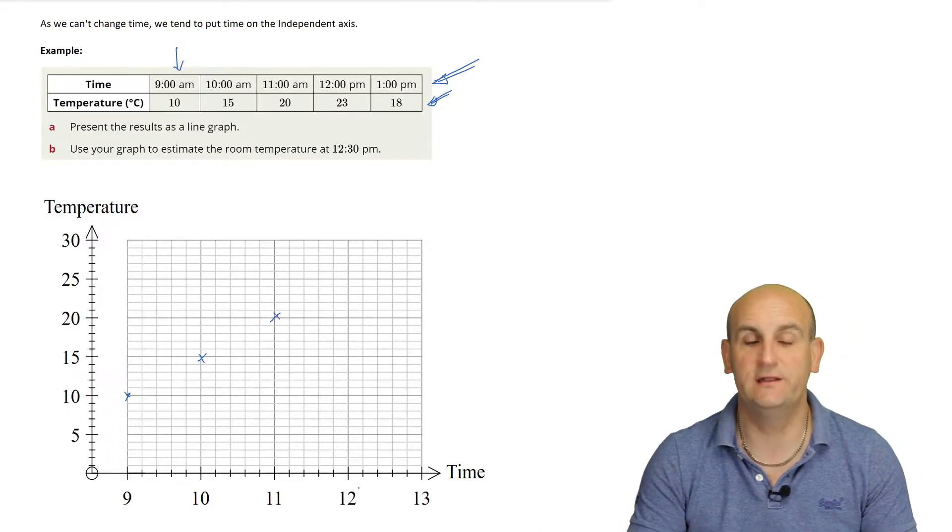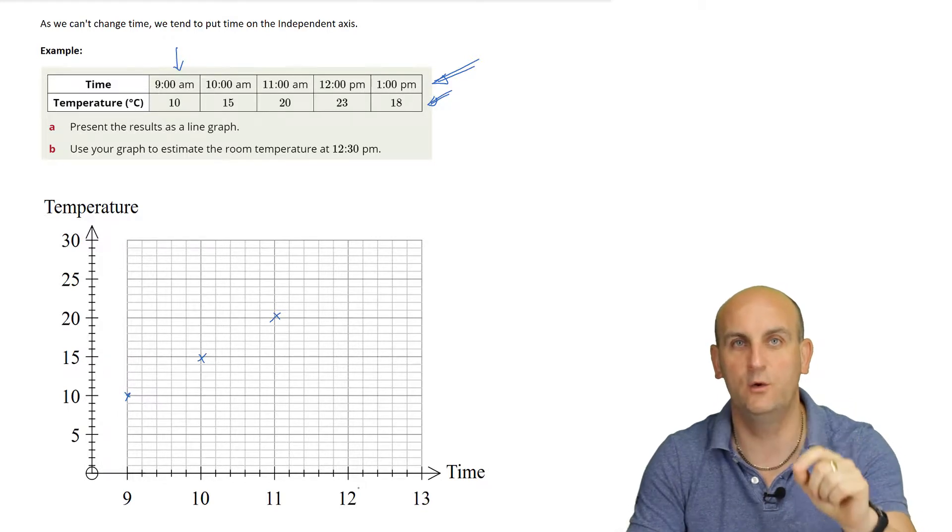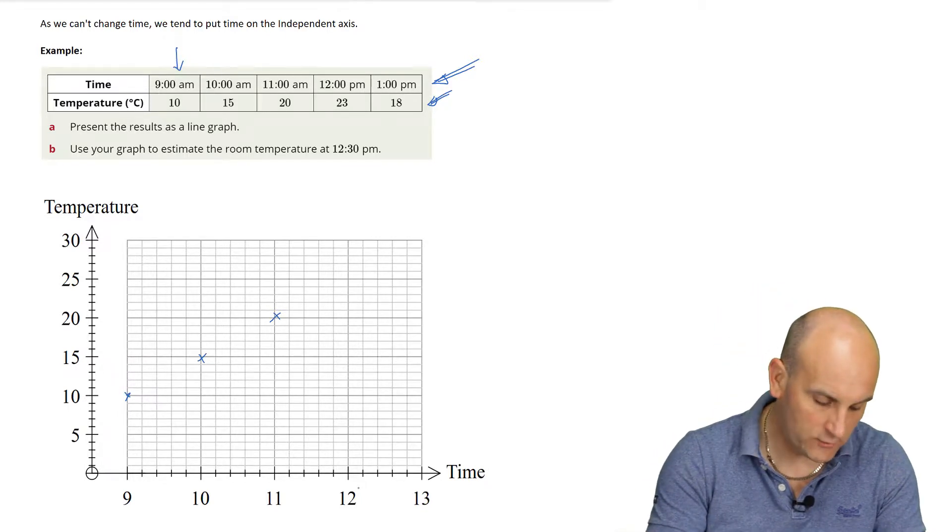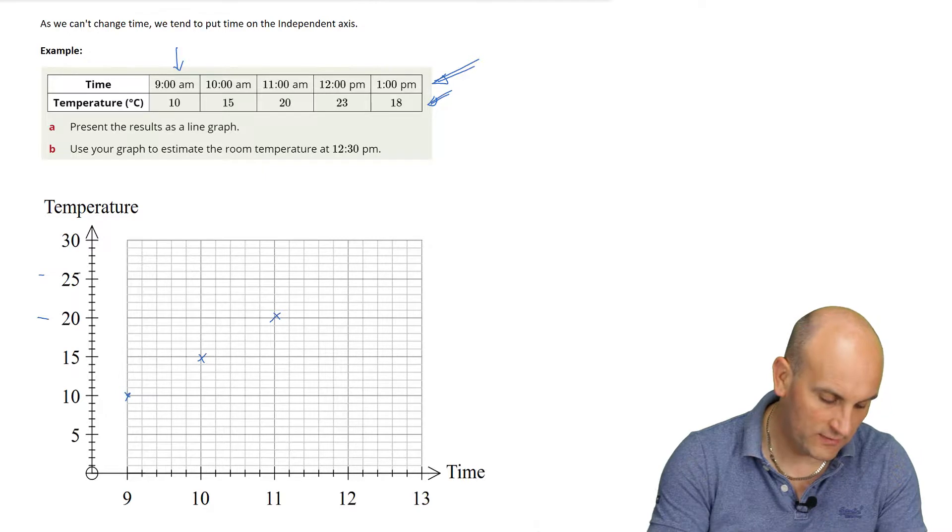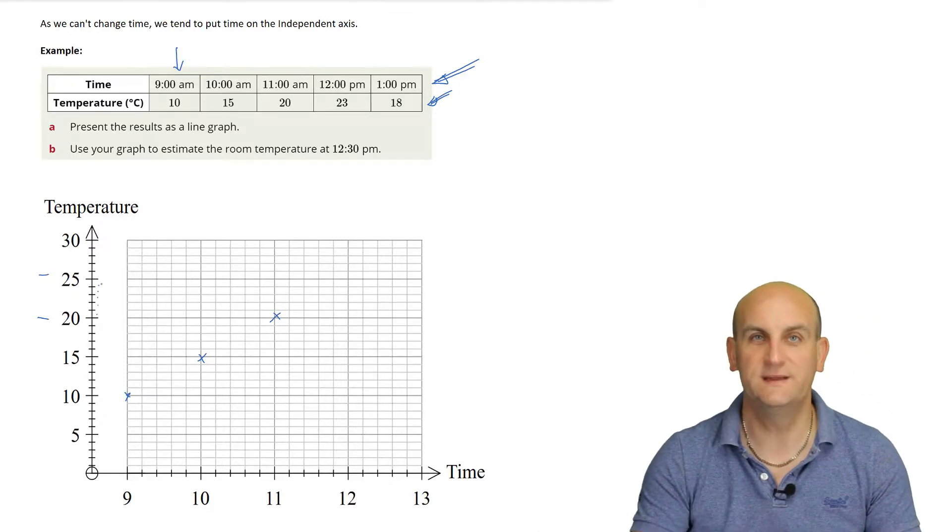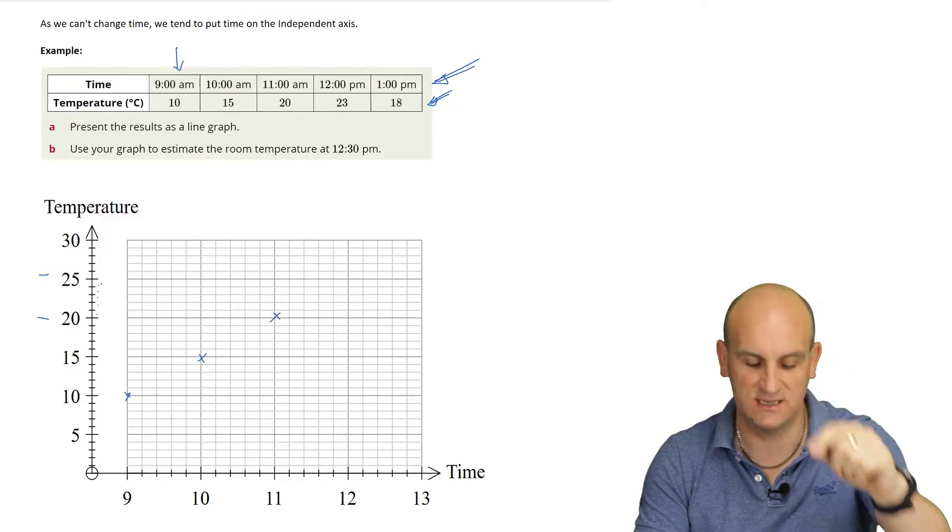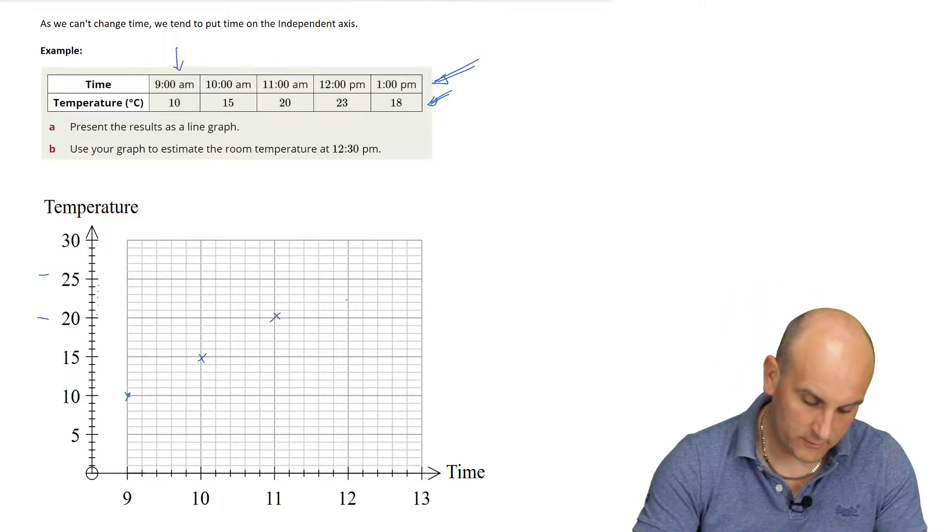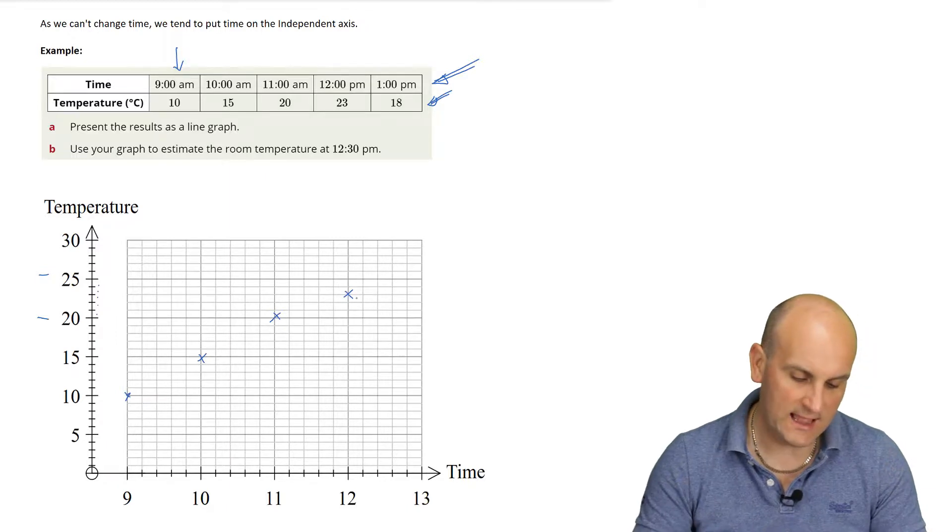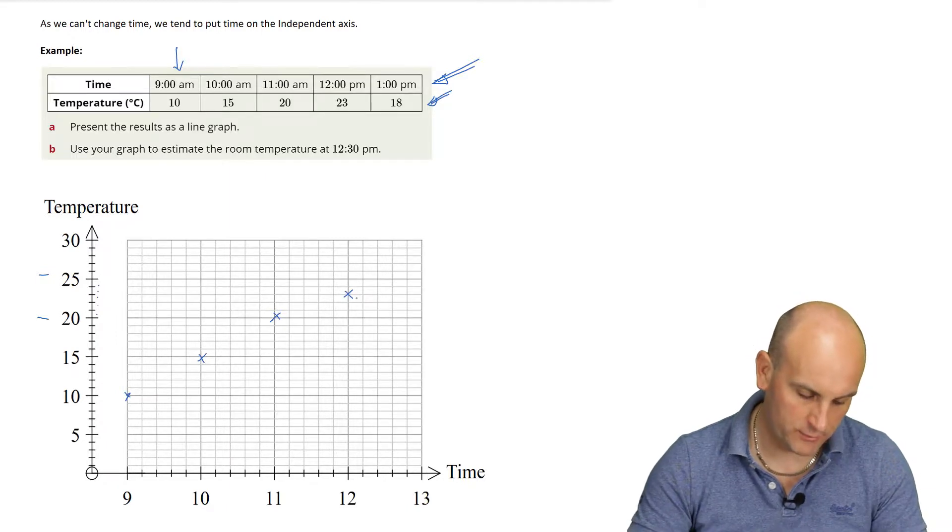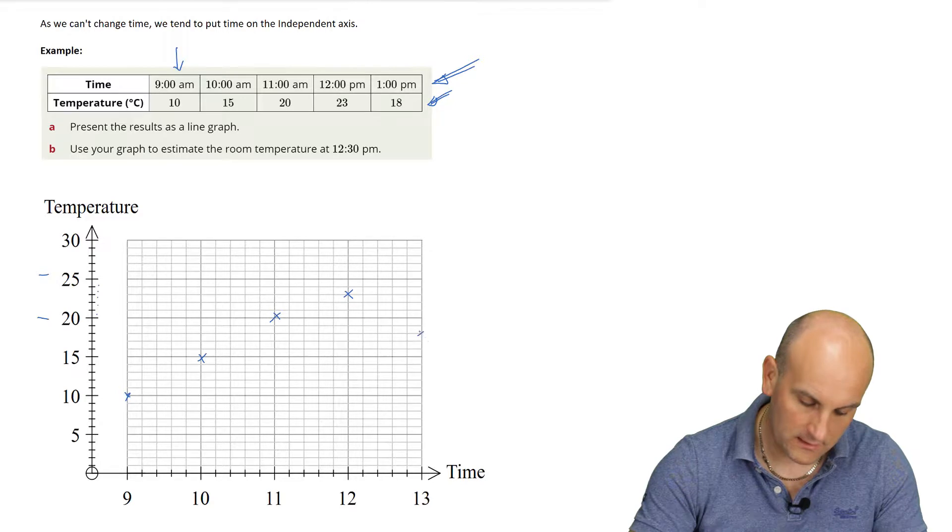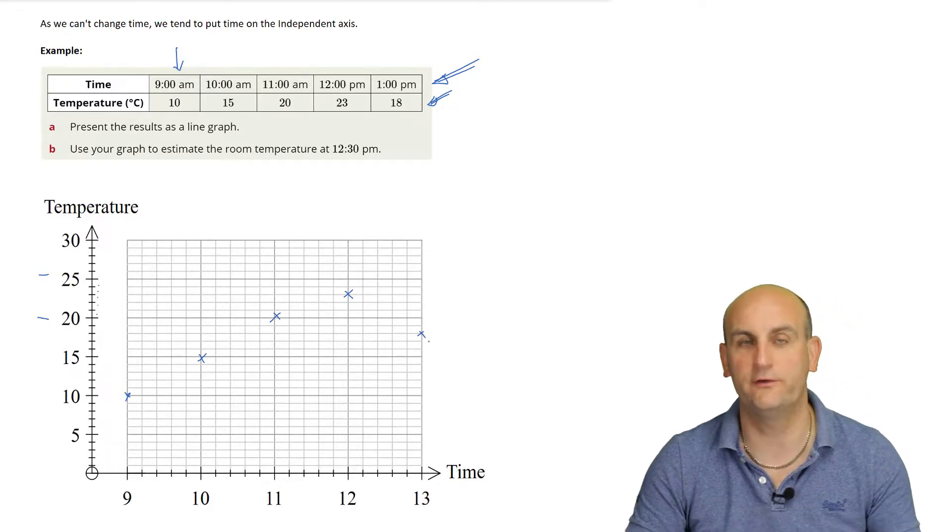11am, it's 20 degrees. At 12, it's 23 degrees. Now, we need to be very careful that we know what the scale is. And we know that we have this here is 20. That's 25. And there are five little gaps between them. Which means each of those gaps stands for 1 degree. So, each of those little boxes stands for 1 degree. So, at 12, I'm going to put a cross at 23. And at 1, I'm going to put a cross at 18. And lo and behold, there are my crosses.